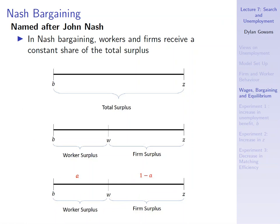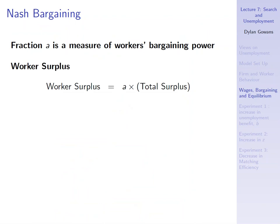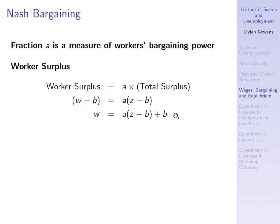That's all Nash bargaining is: the worker's surplus must be share A, and the firm surplus must be share 1 minus A. The fraction A is a measure of workers' bargaining power. Mathematically, the worker's surplus W minus B has to equal A times total surplus Z minus B. We can rearrange this: W equals A times (Z minus B) plus B. The higher is A, the higher is W, because the higher is A the higher is the worker's bargaining power and therefore the higher is the worker's share of total surplus.